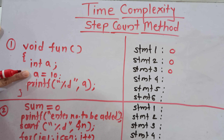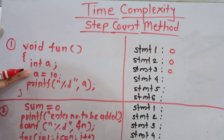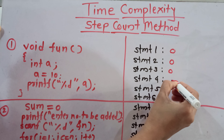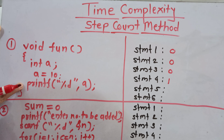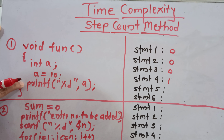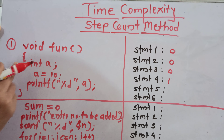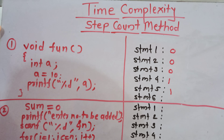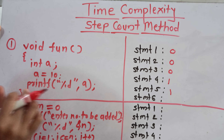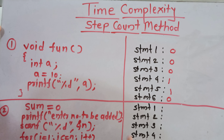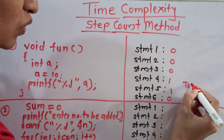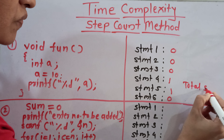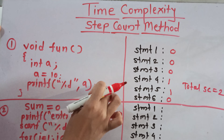The next instruction is a is equal to 10. Here we are assigning value 10 to a, so this instruction is going to execute once — the frequency count or step count is 1. Next is the printf statement, where we are going to print that value. Again it executes only once, so the step count is 1. The closing brace has a frequency count of 0. So the total frequency count or step count for this algorithm is equal to 2.